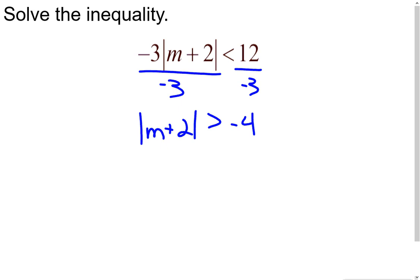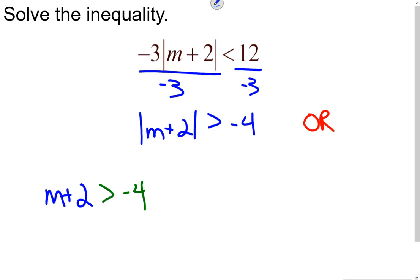At this point we break it apart into two inequalities. We have the greater than symbol — that is an OR compound inequality. Breaking it into those two inequalities: one time we take what's inside the absolute value, m plus 2, and keep the other side as is — negative 4 — with the symbol staying the same. The other time, we take m plus 2 again, but switch the sign on the other side: negative 4 becomes positive 4 and we flip the inequality symbol. Remember, we still have an OR compound inequality.